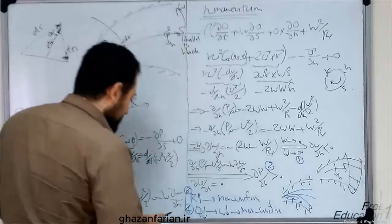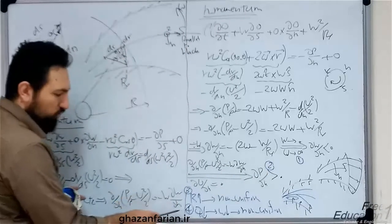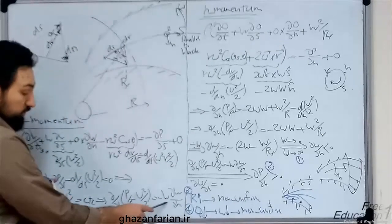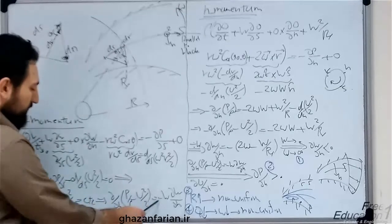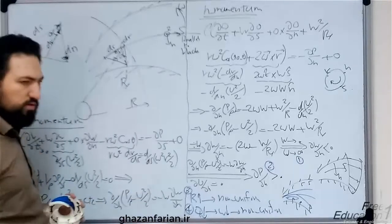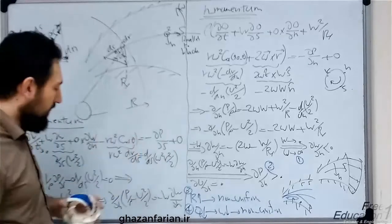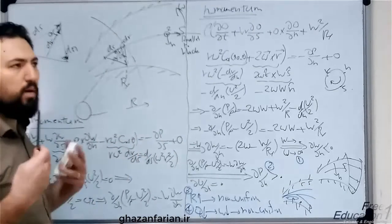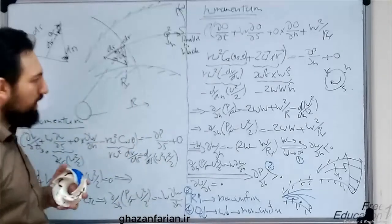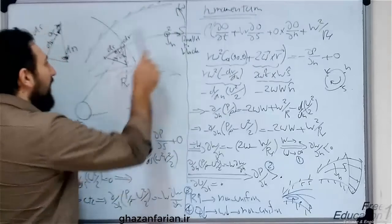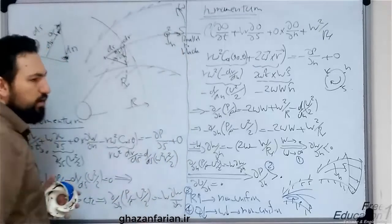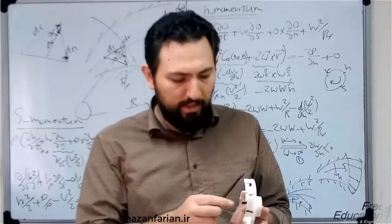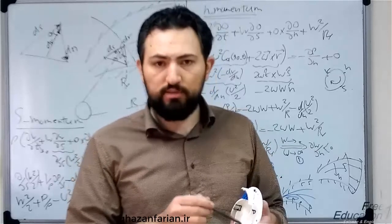Another point: based on this relation, if the derivative of W with respect to n is negative, and W itself is a positive parameter, then from the n-momentum equation the sign of dp/dn is positive. So by increasing the value of n, pressure increases. We therefore have a high-pressure zone near the pressure side at the top of the blade, and a low-pressure zone — the suction side — at the bottom of the blade.